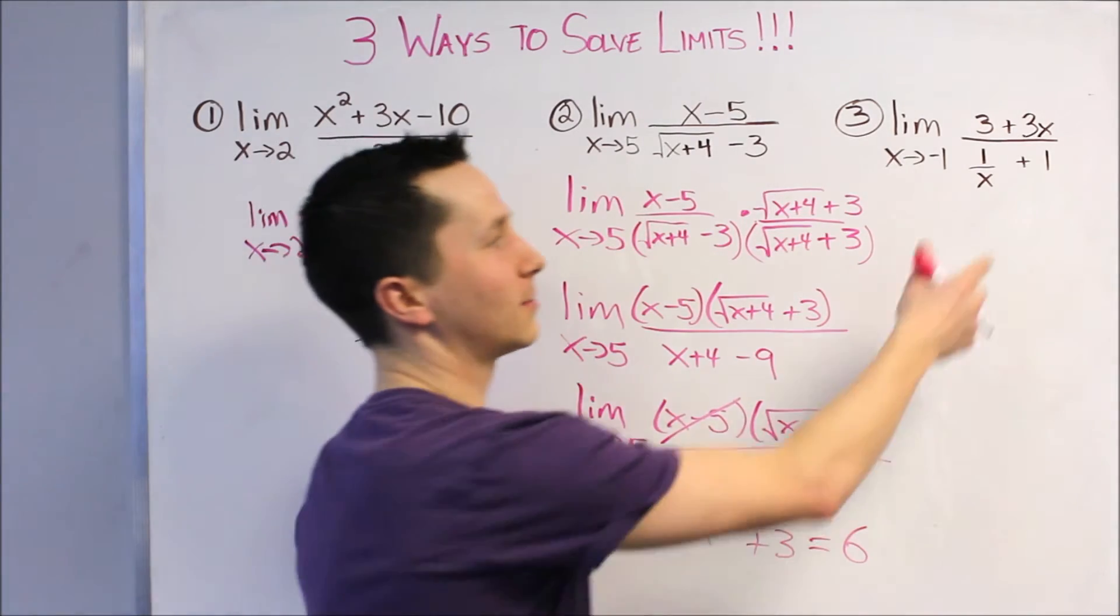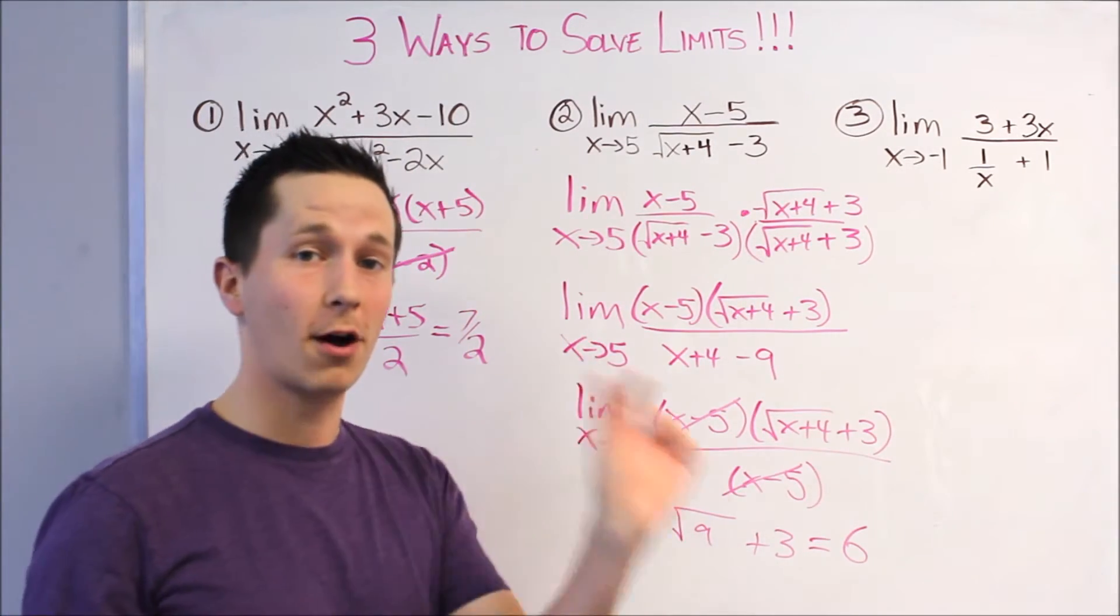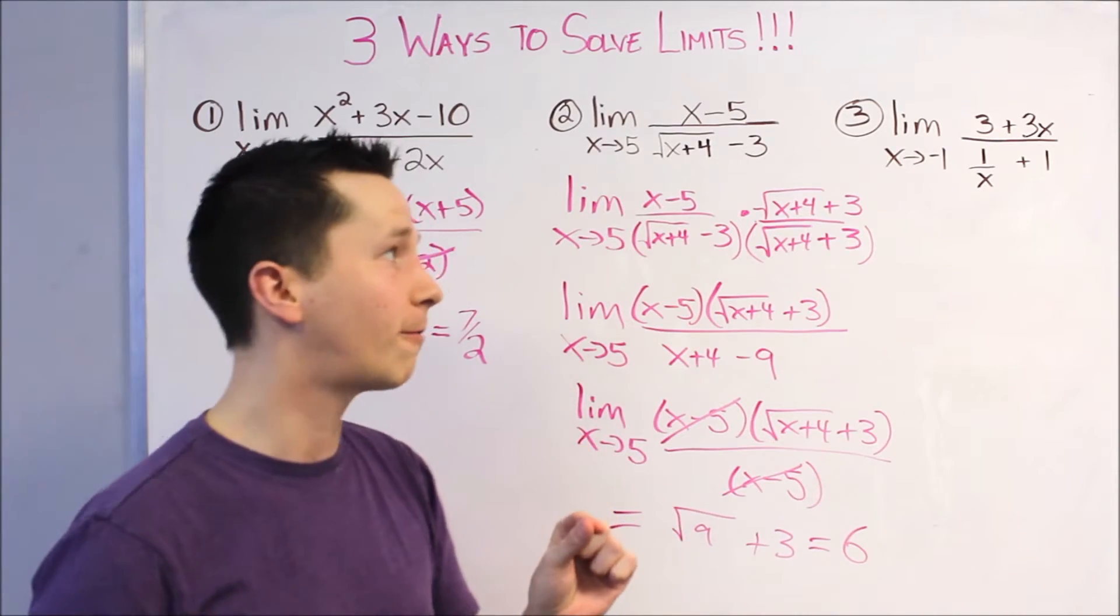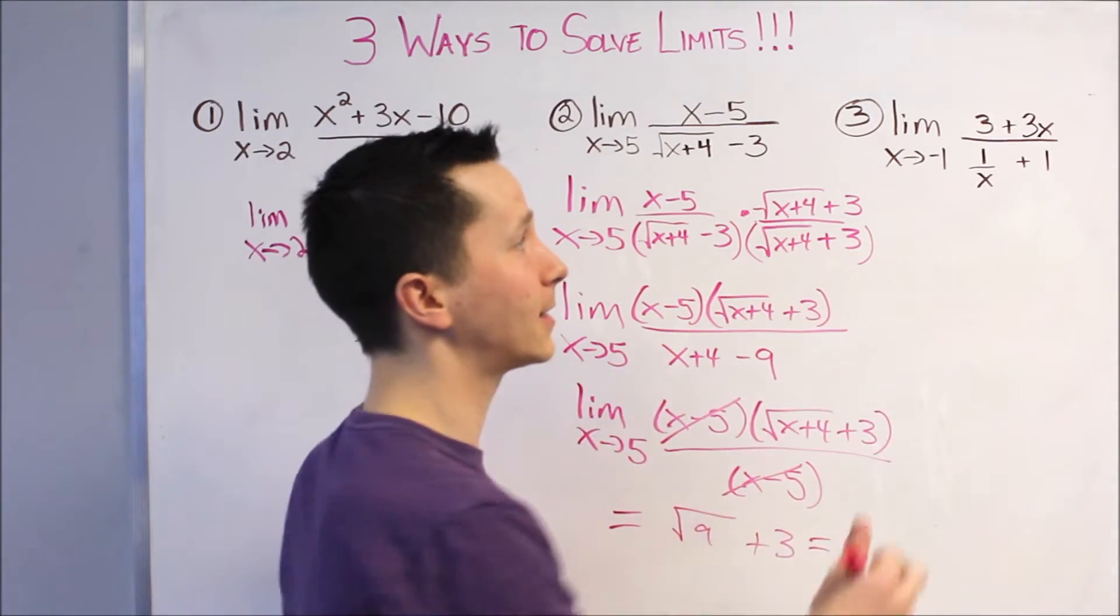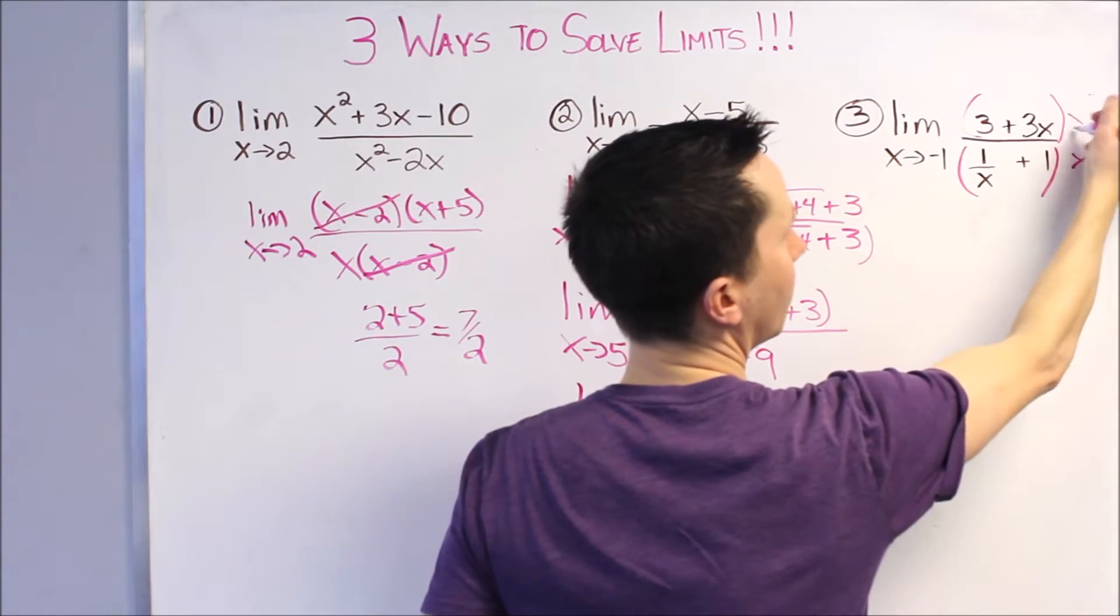Third method. And, that is where we have fractions within fractions. I'm just going to multiply everything by the common denominator of the small fraction. And, that is X in this case. So, I'm going to multiply everything by X, top and bottom.